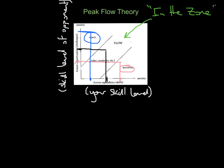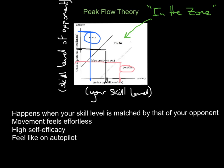Athletes report being in the zone or experiencing peak flow when their skill level is matched by that of their opponent. If there's a mismatch, you'll either get bored or get anxious. They also report that when in the zone, their movement feels effortless — everything they do is just working, very efficient, with no wastage of energy. They have high levels of self-efficacy, feeling very confident in what they're doing. Finally, it feels like they're on autopilot, meaning they don't have to think about executing the skills anymore, so they can devote more brain time to tactics and strategy. This theory depends on not being anxious or over-aroused, and recognising that your ability level is matched by that of your opponent. Those are the four key theories of arousal — you need to be able to describe them and explain the factors that affect each one.